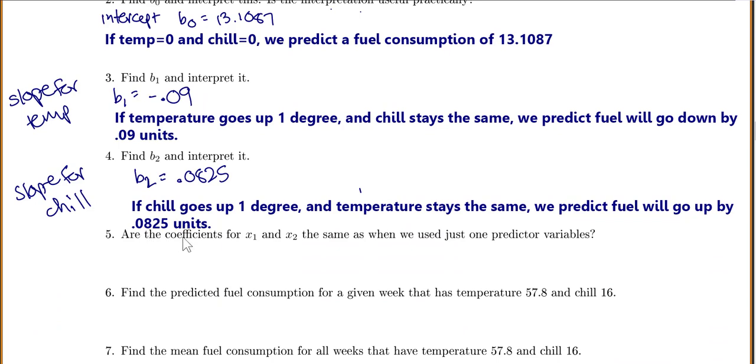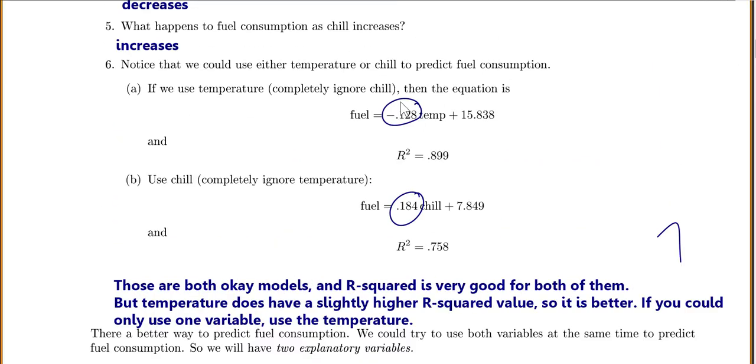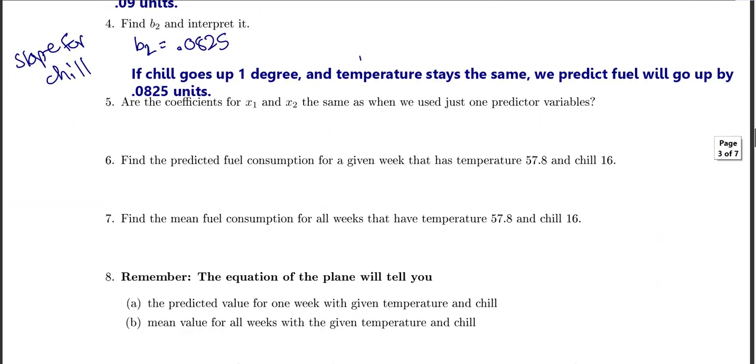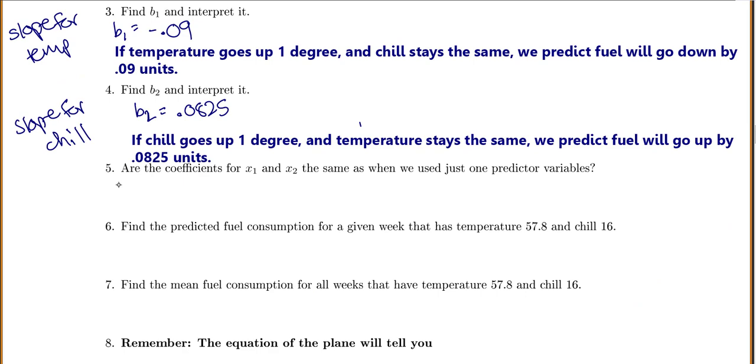So next I want to know, are our slope coefficients for x1 and x2 the same as when we use just one predictor variable? So let's go up a couple pages to where we had those. So our previous slopes were negative 0.128 and 0.184. So let's see what they are now to compare that. So for our single models, we had our temperature slope was negative 0.128. Now, it is negative 0.09.